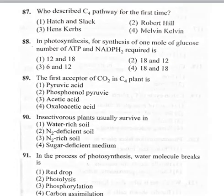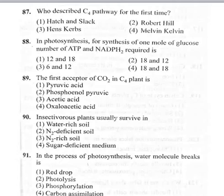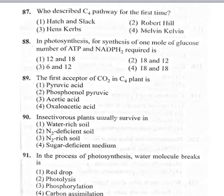87th bit: who described the C4 pathway for the first time? Option 1 Hatch and Slack, option 2 Robert Hill, option 3 Hans Krebs, option 4 Melvin Calvin. Melvin Calvin discovered the C3 cycle; Krebs discovered the Krebs (citric acid) cycle; Robert Hill proved the Hill reaction. C4 pathway is also called the Hatch-Slack pathway, discovered by Hatch and Slack. Correct option is first: Hatch and Slack.